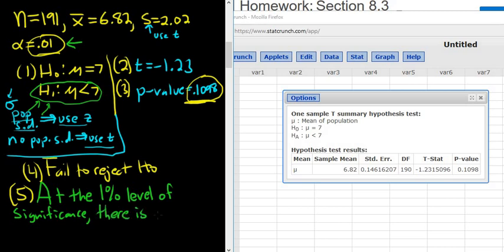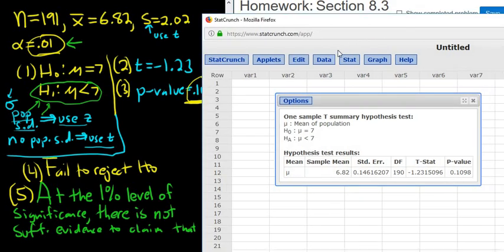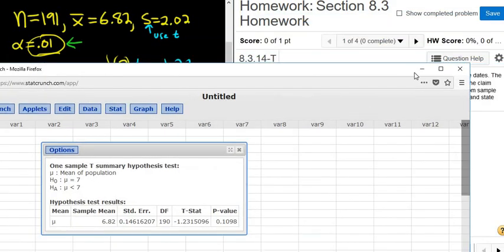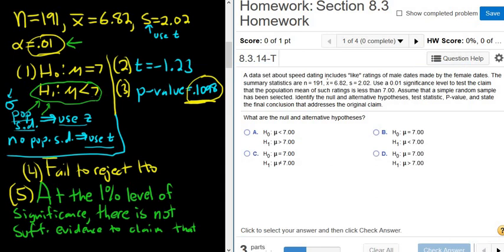We fail to reject, so there is not. There is not. Just memorize it, I guess. Reject there is. Reject there is. Reject there is. Fail to reject, there is not. So fail to reject, there is not sufficient evidence. I'll put suff evidence to claim that h1 is true. So what is h1? Well, h1 in this case is the last sentence. It's here too, mu less than 7. But we can just read it here. The population mean of such ratings is less than 7.